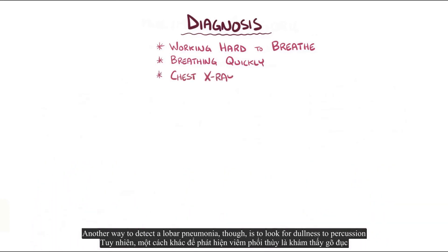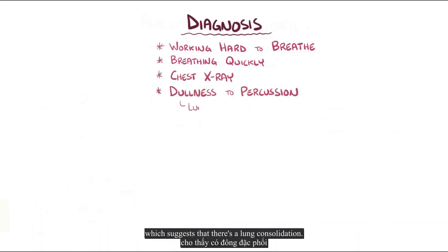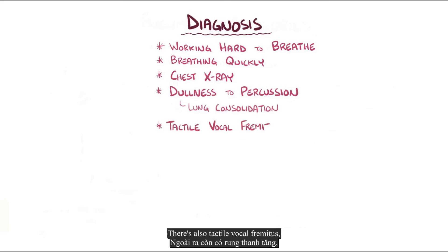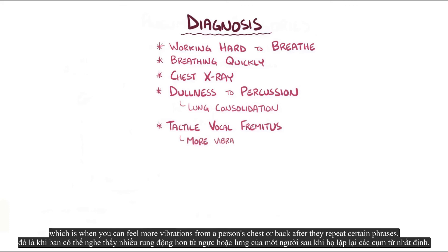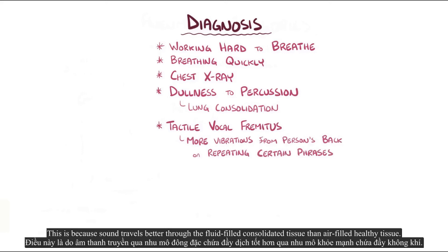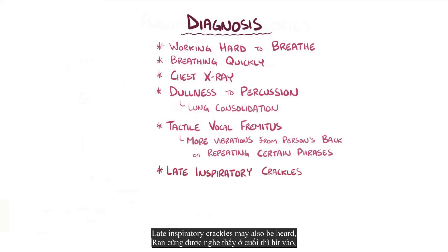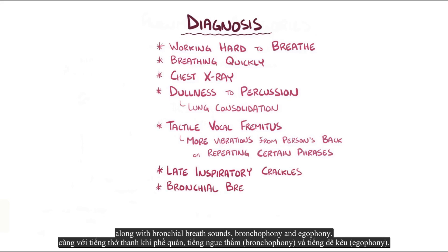Another way to detect lobar pneumonia is to look for dullness to percussion, which suggests lung consolidation. There's also tactile vocal fremitus, which is when you can feel more vibrations from a person's chest or back after they repeat certain phrases. This is because sound travels better through fluid-filled consolidated tissue than air-filled healthy tissue. Late inspiratory crackles might also be heard, along with bronchial breath sounds, bronchophony, and egophony.